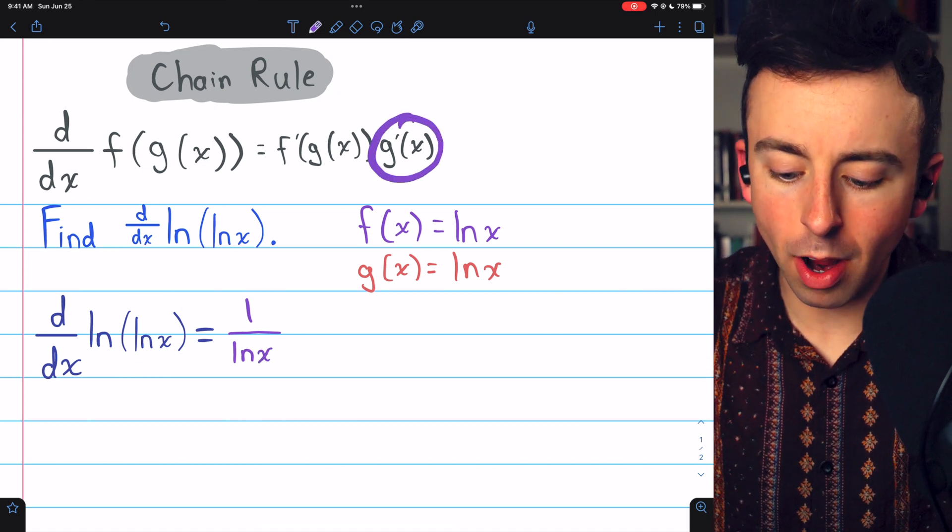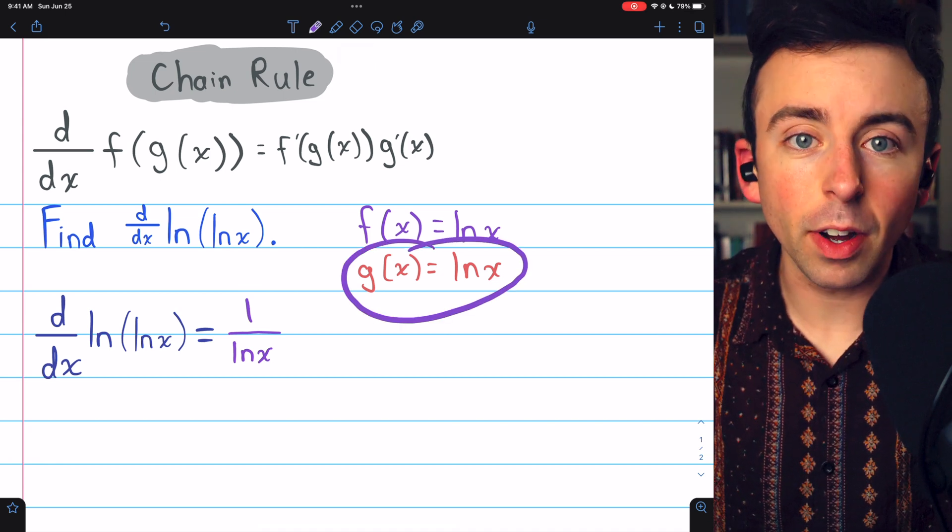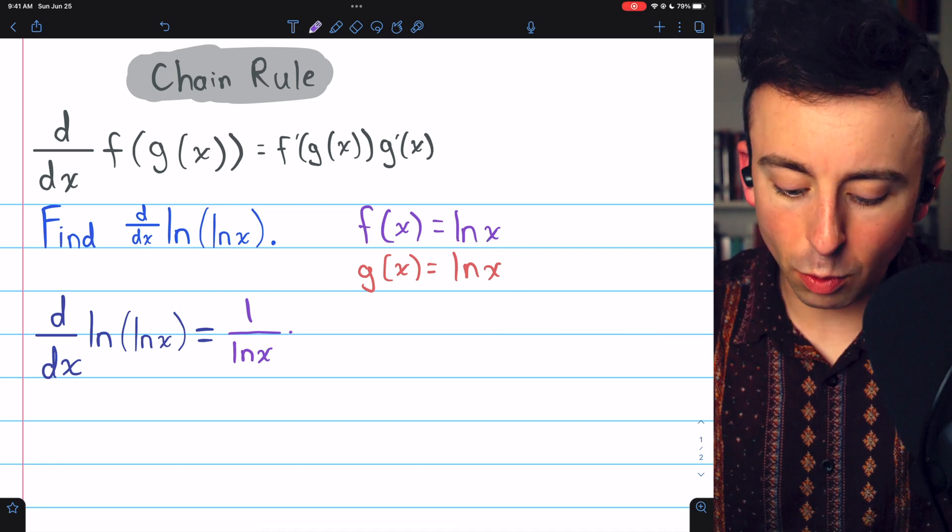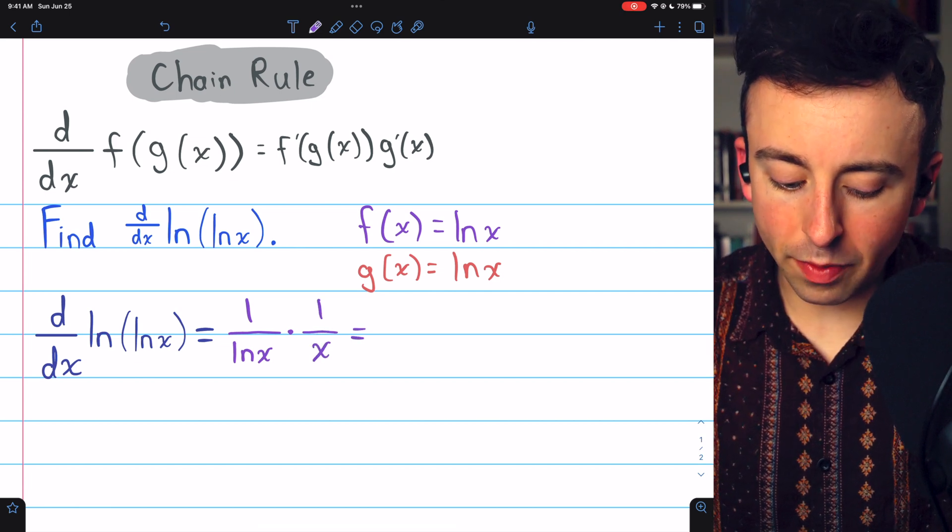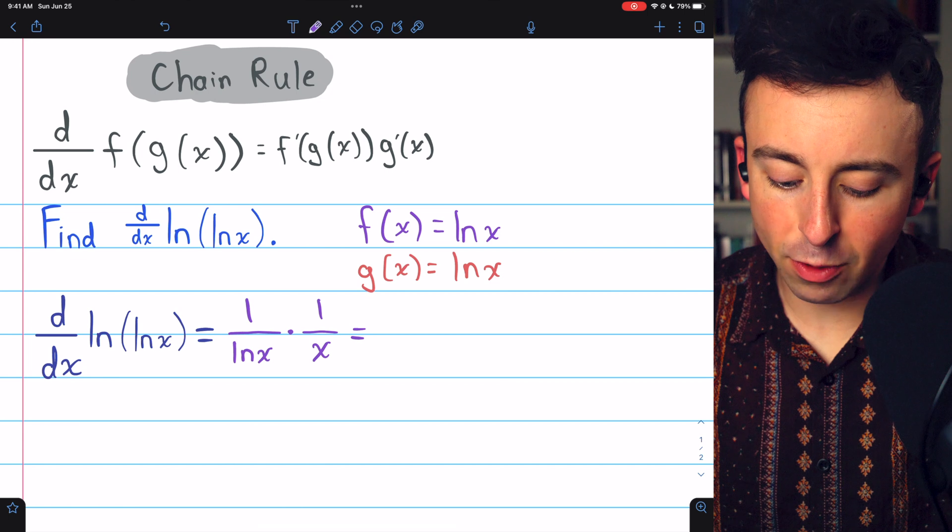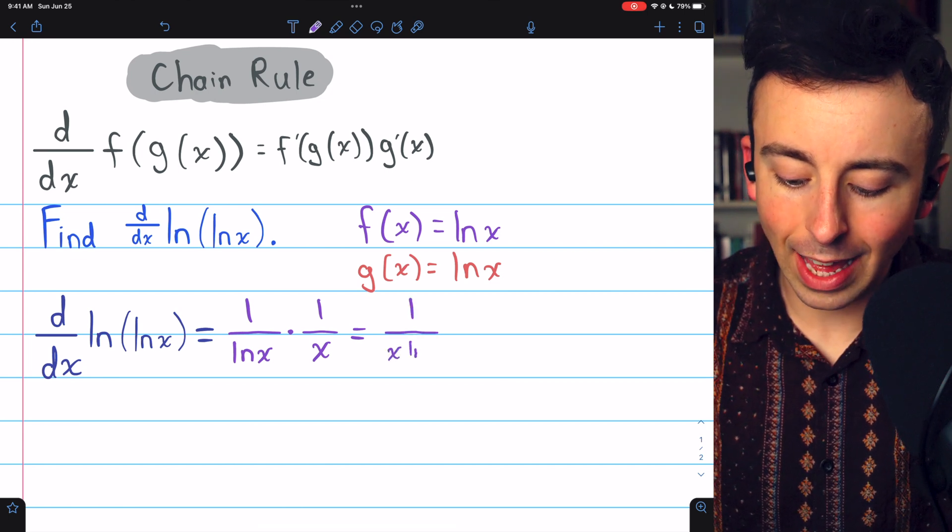Then we multiply by g prime, the derivative of the inside function. The inside function is ln(x), and the derivative of that is 1 over x. Thus, the derivative of the natural log of the natural log of x is 1 over x ln(x).